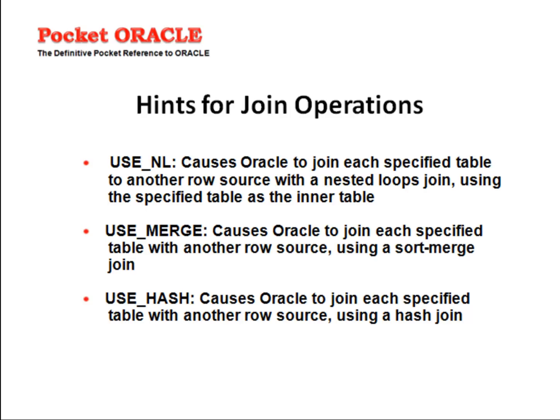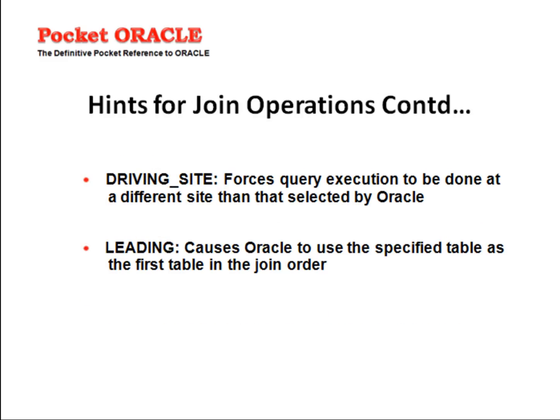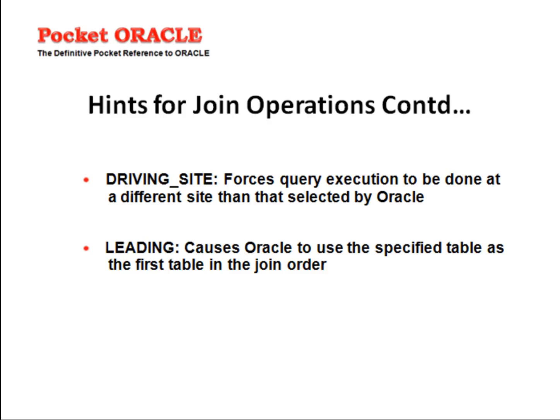USE_HASH works well for smaller tables. DRIVING_SITE: this hint forces query execution to be done at a different site than that selected by Oracle. LEADING: the LEADING hint causes Oracle to use the specified table as the first table in the join order. Hints for parallel execution — PARALLEL: this hint lets you specify the desired number of concurrent servers that can be used for a parallel operation. NO_PARALLEL overrides a parallel specification in the table clause.